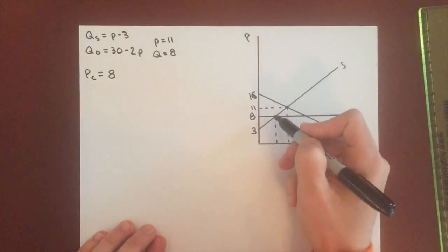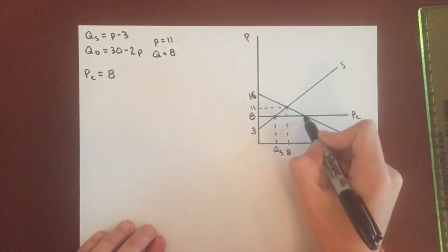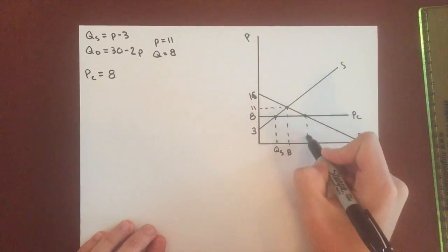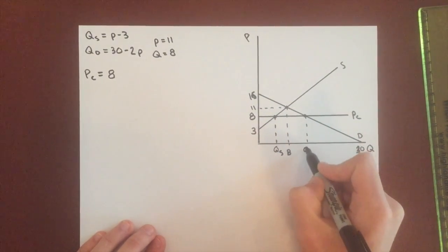Quantity supplied is going to be this. And you can see it's clearly less than the quantity demanded. So we're going to have a shortage.